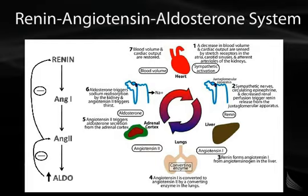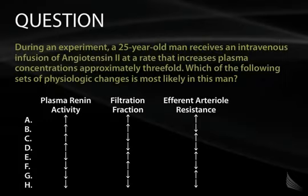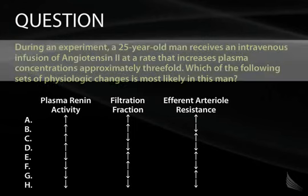To put that feedback system in context: during an experiment, a 25-year-old man receives an intravenous infusion of angiotensin 2 at a rate that increases the plasma concentration approximately threefold. Which of the following sets of physiologic changes is most likely in this man? This question requires understanding the feedback — we're talking about the renin-angiotensin 2-aldosterone system.